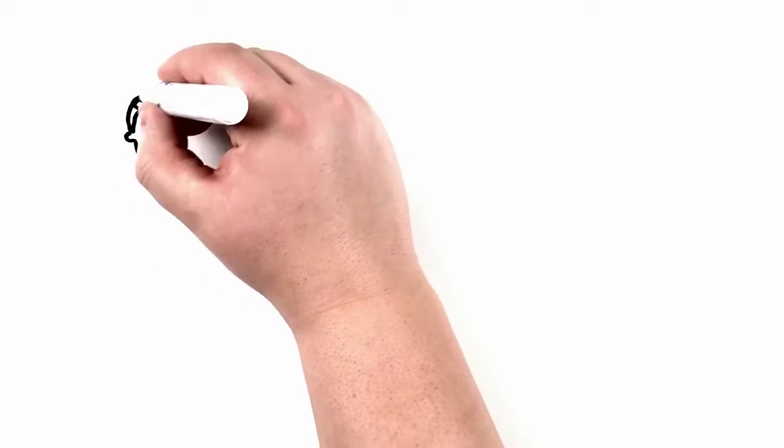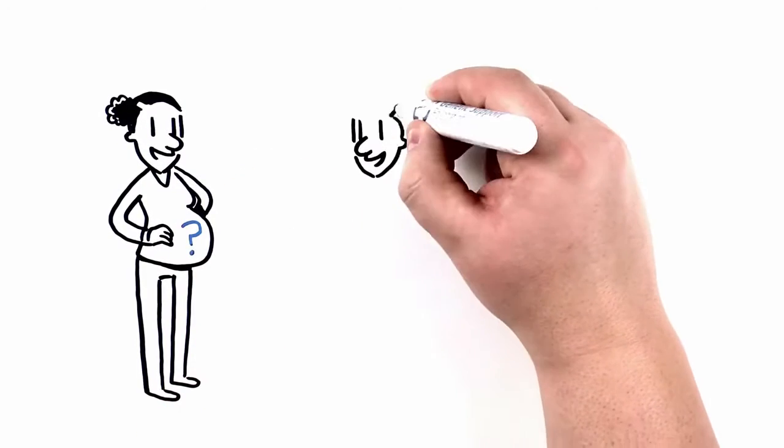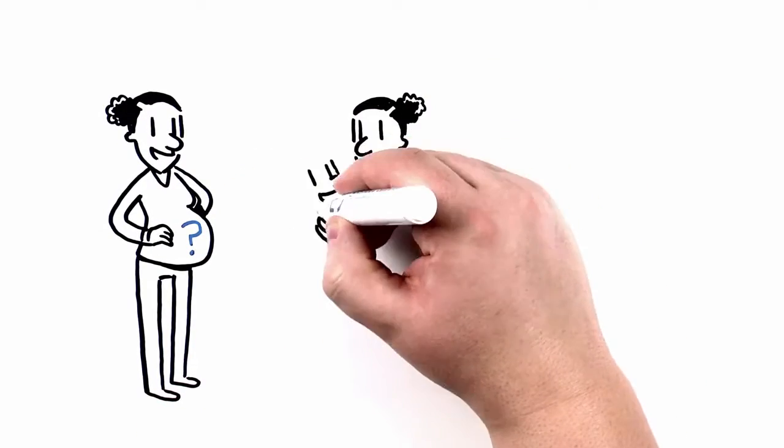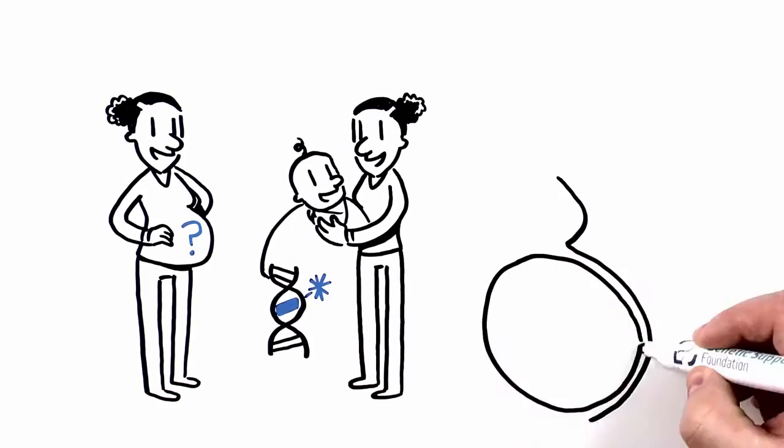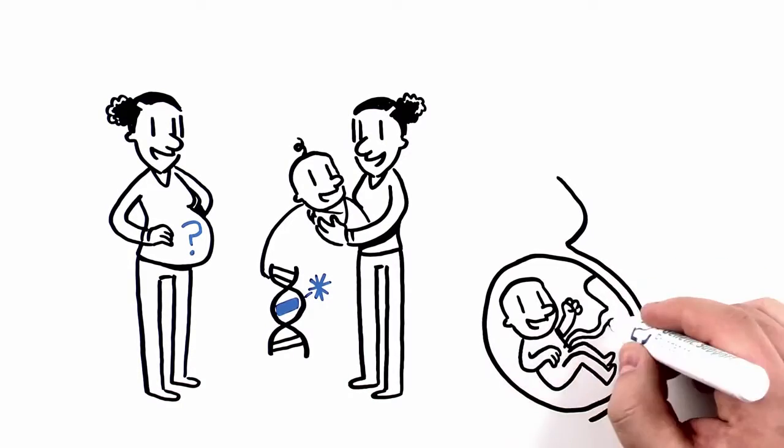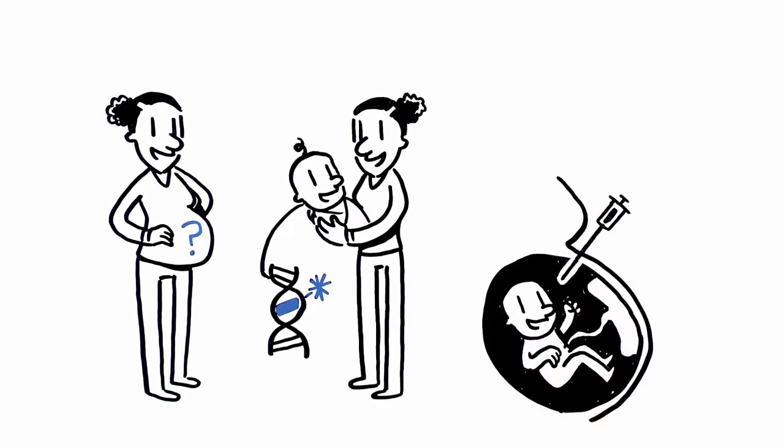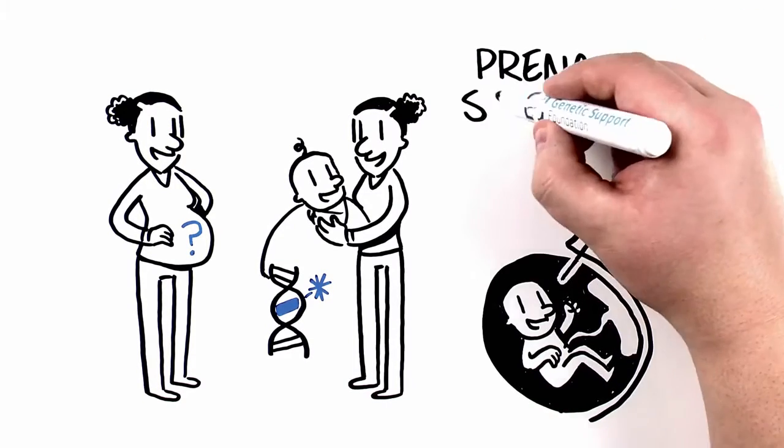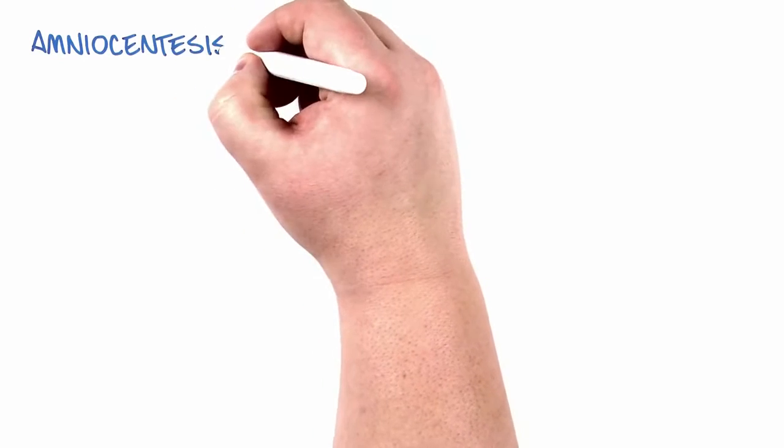On the other hand, some women may feel comfortable with their chance of a genetic condition or are confident that, even if the baby did have a genetic condition, it wouldn't alter their pregnancy plans. Or they may prefer not to face the decision of whether or not to have an amniocentesis if the NIPT comes back high risk. In these cases, some women may decide not to undergo any prenatal screening.